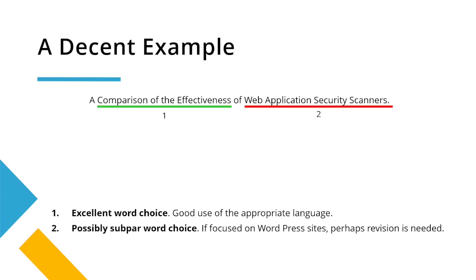We're going to focus on web apps, but we can be a bit more scoped in. We might want to say 'WordPress web applications' rather than just 'web application scanners.' Some revision may be necessary so you're not being too generic. You want to make sure the reader thinks, 'yes, I want to read this report because I'm interested in WordPress' — you don't want them to have to scour through it to find out you're covering WordPress only when you mention it in the methodology.